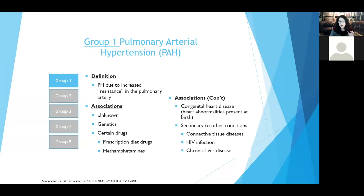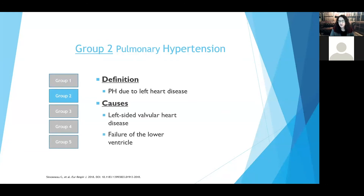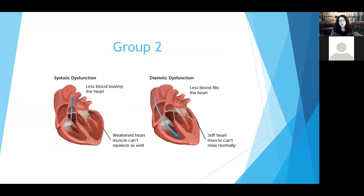It's very important to understand this condition because this is the group where we have special medications approved to treat people. Group two disease is pulmonary hypertension related to left heart disease — when the heart is stiff or weak and causes backup of pressure in the lungs. This can be due to valve disease, a heart attack, or changes in the sac around the heart that restrict its movement, all resulting in increased lung pressures.